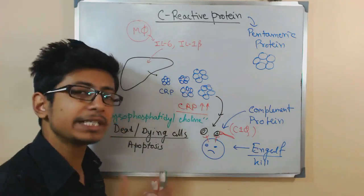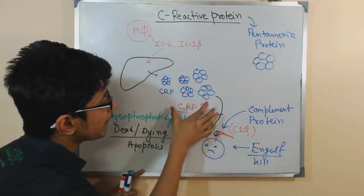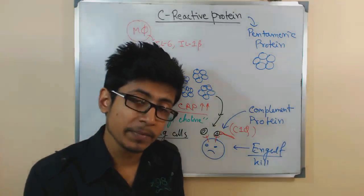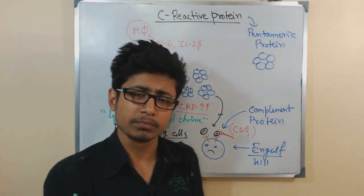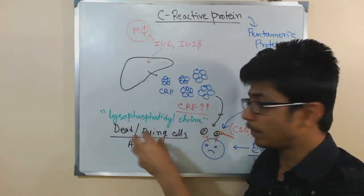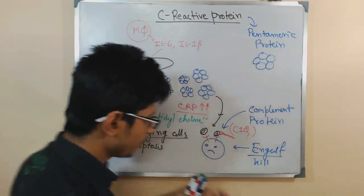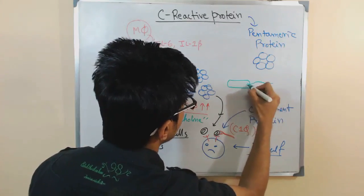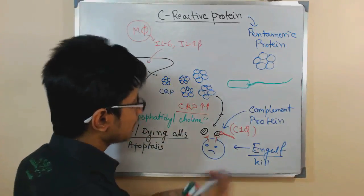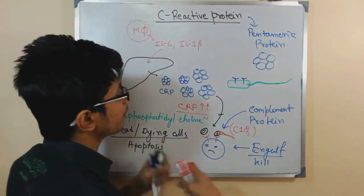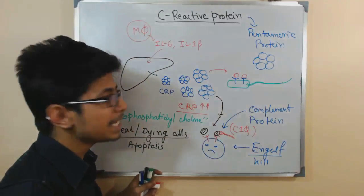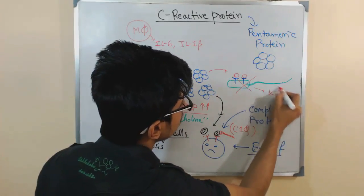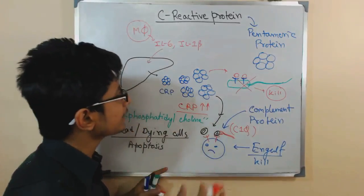The second function: CRP can also adhere to bacterial cells themselves. Lysophosphatidylcholine is also found on certain bacteria, so CRP can go and bind with that receptor on the bacterial surface. Once CRP binds with it, it again triggers complement activation, which can ultimately destroy and kill the bacteria.